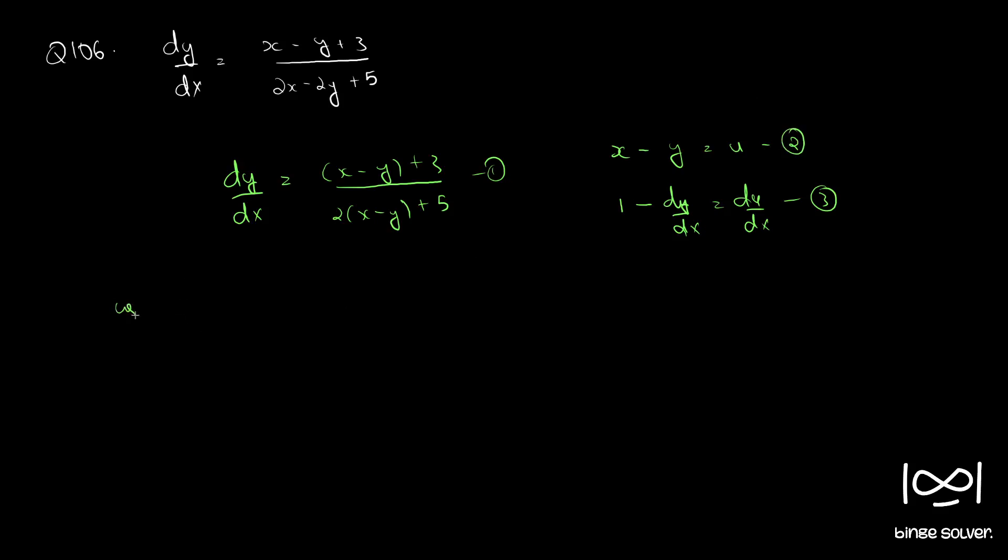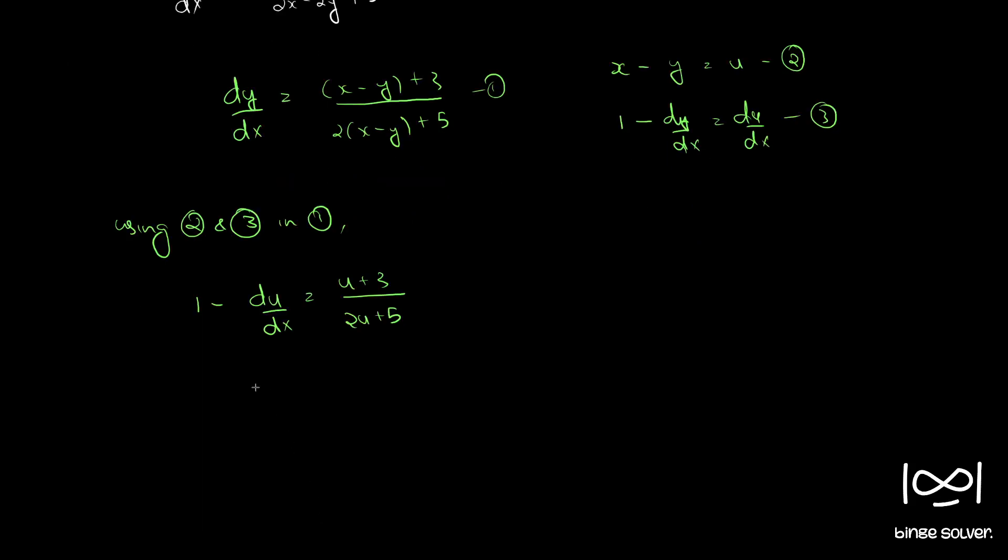So using equations 2 and 3 in equation 1, we get 1 - du/dx = (u + 3)/(2u + 5), or du/dx = 1 - (u + 3)/(2u + 5) = (2u + 5 - u - 3)/(2u + 5).